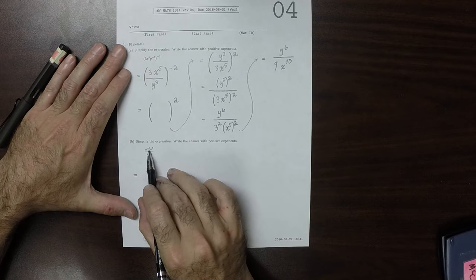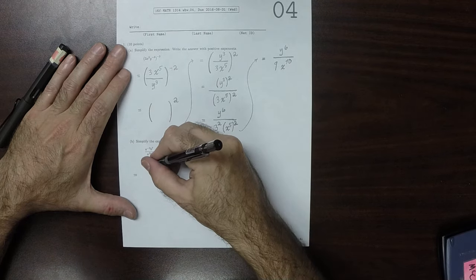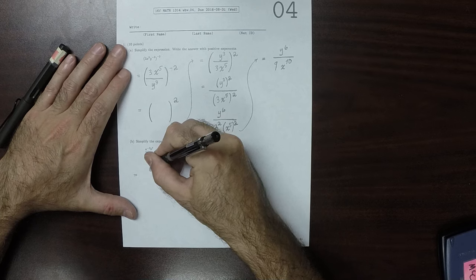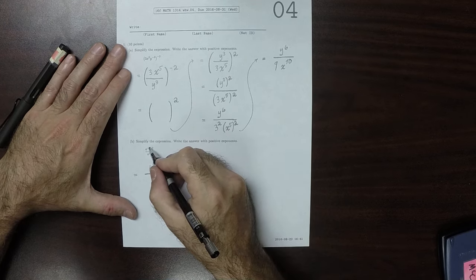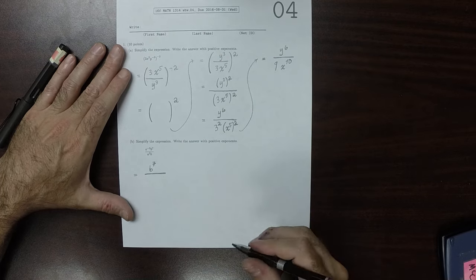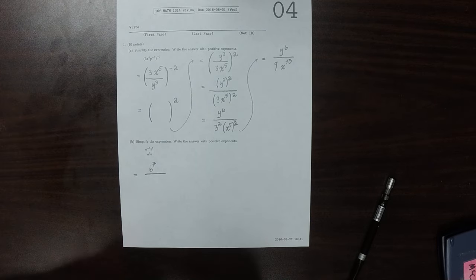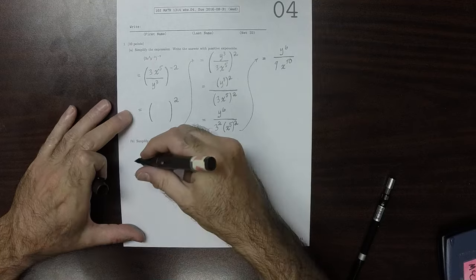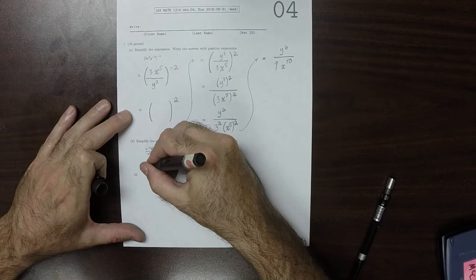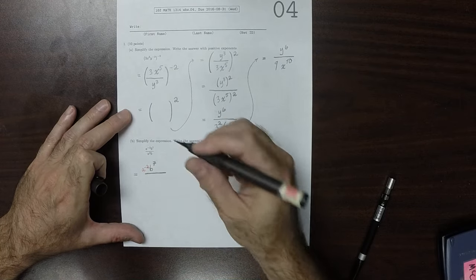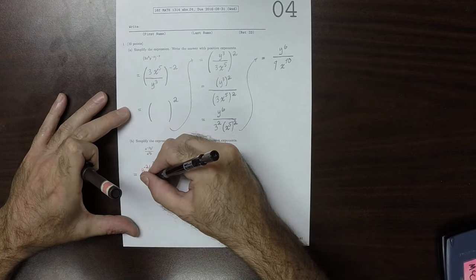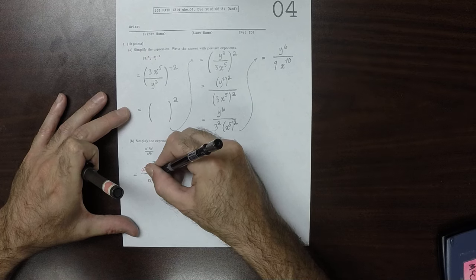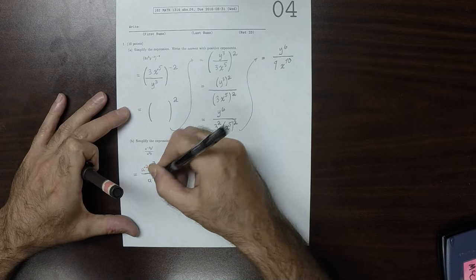Well, here I see a negative exponent. So, that's b to 7, divided by, I'll move this a to negative 2 to the denominator. So, I'll do it like this. This is a to negative 2. This will be the red one. So, over a squared b.